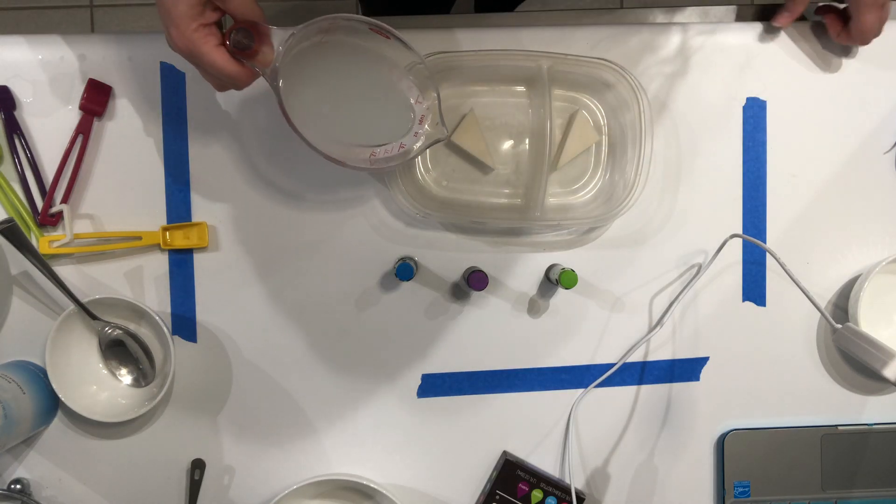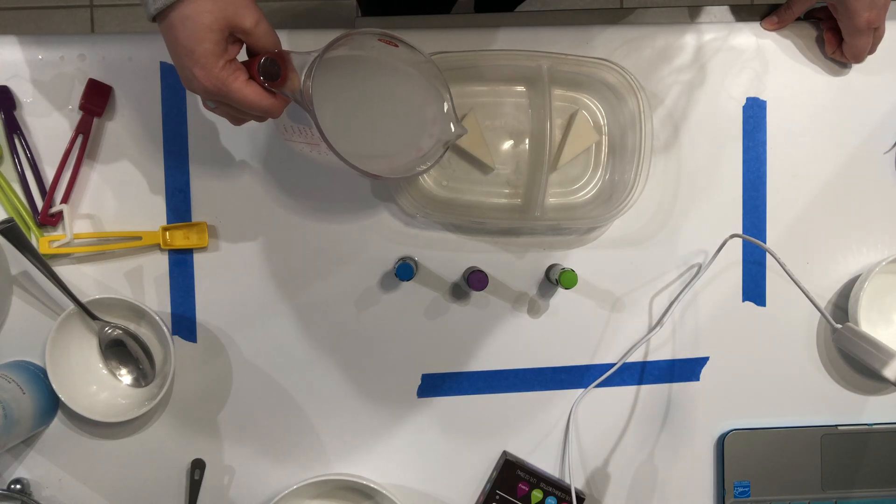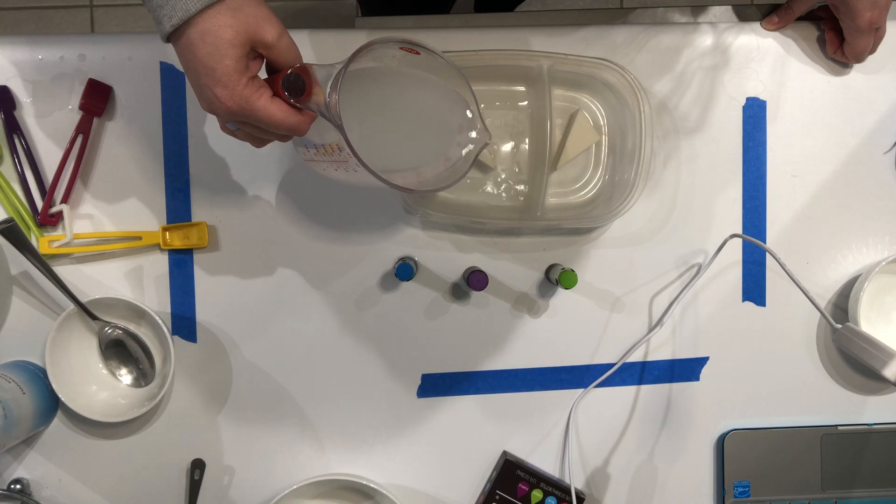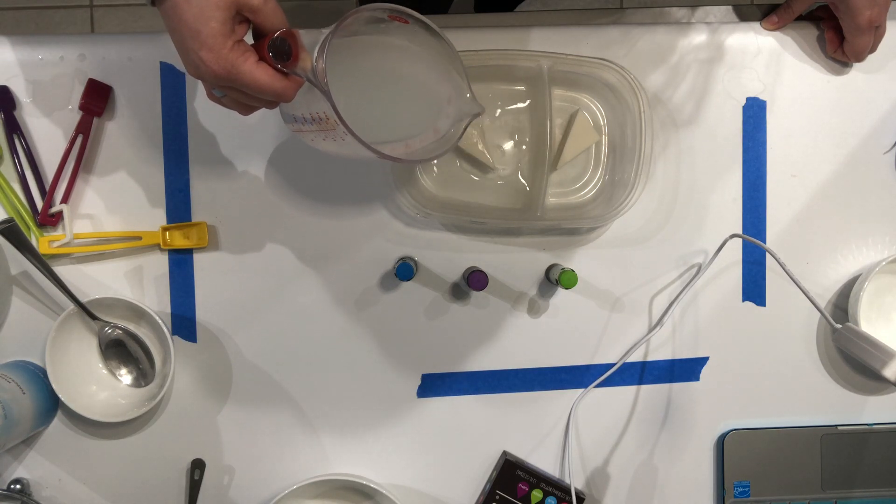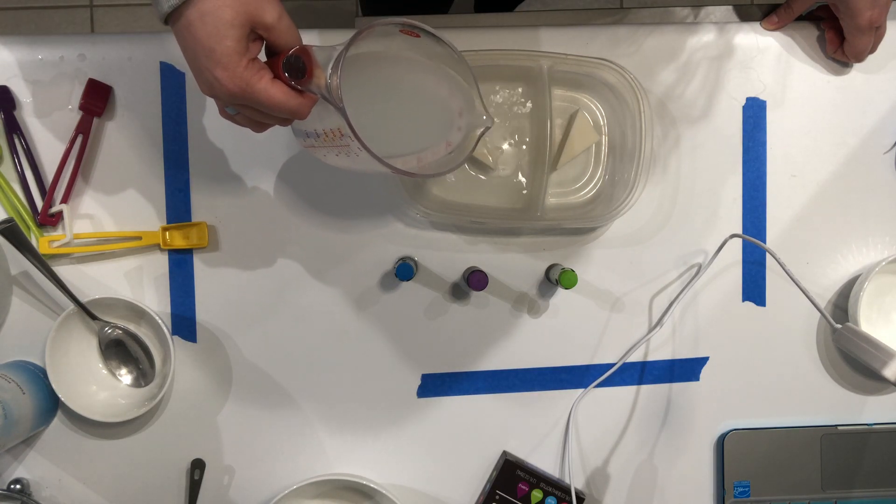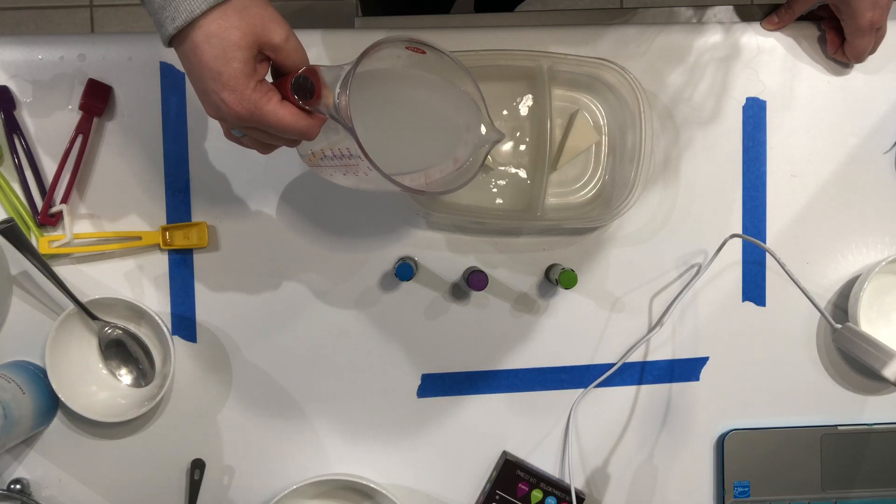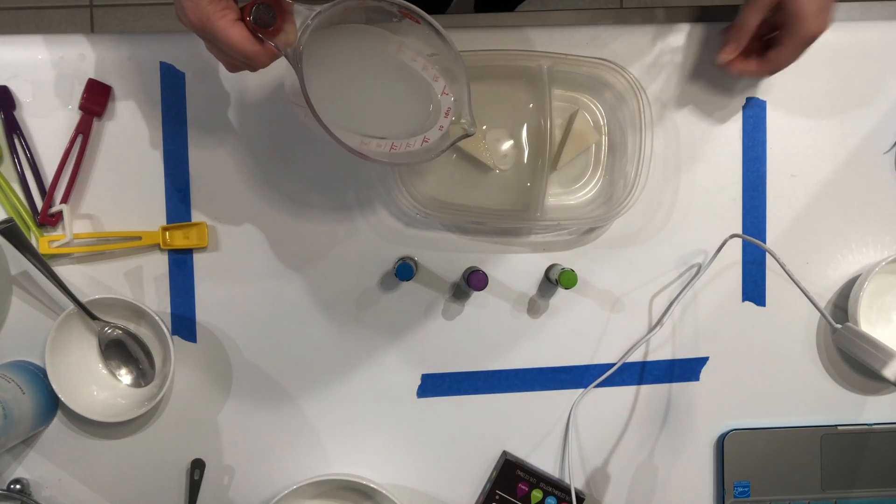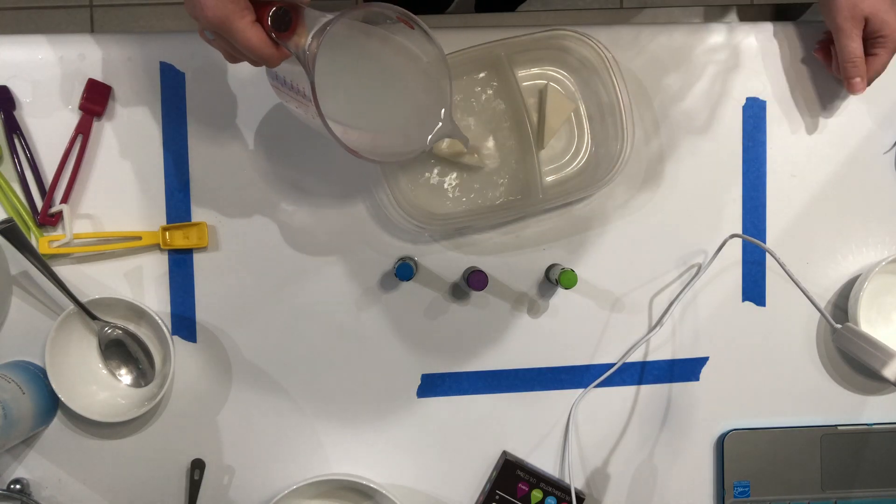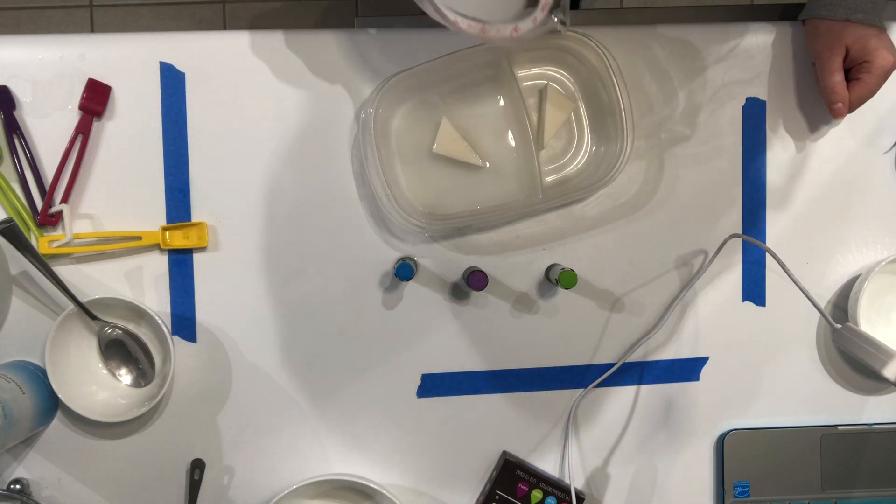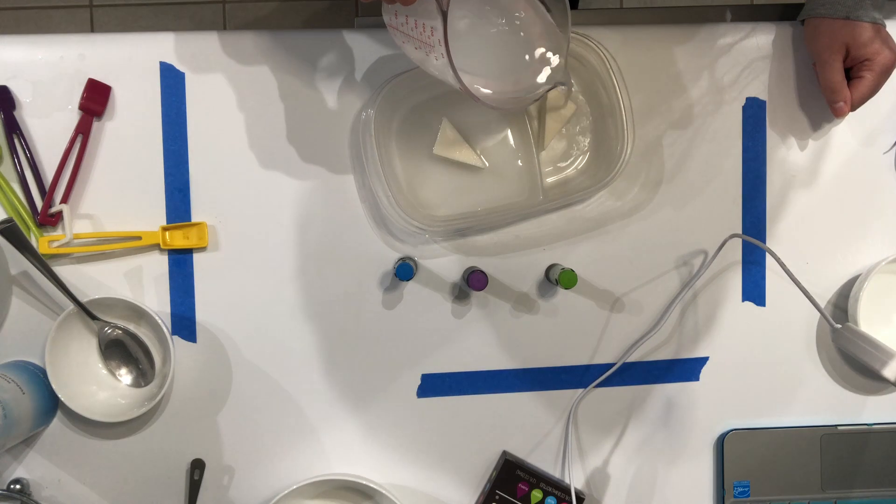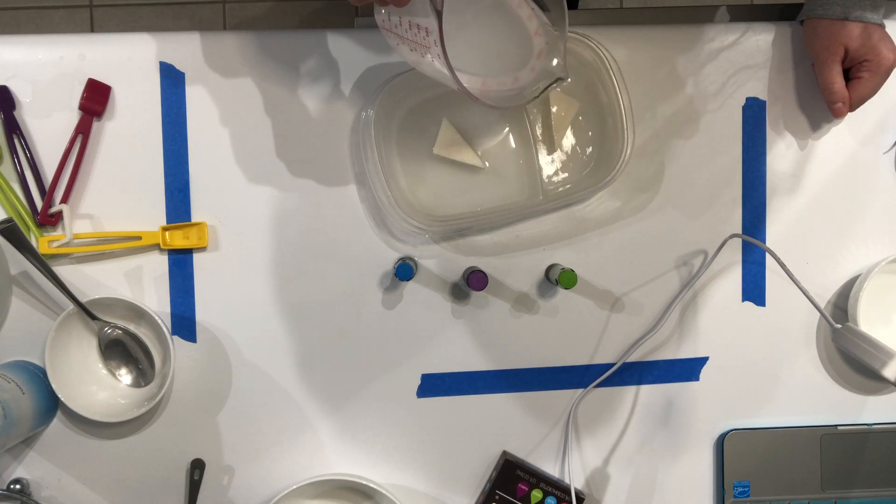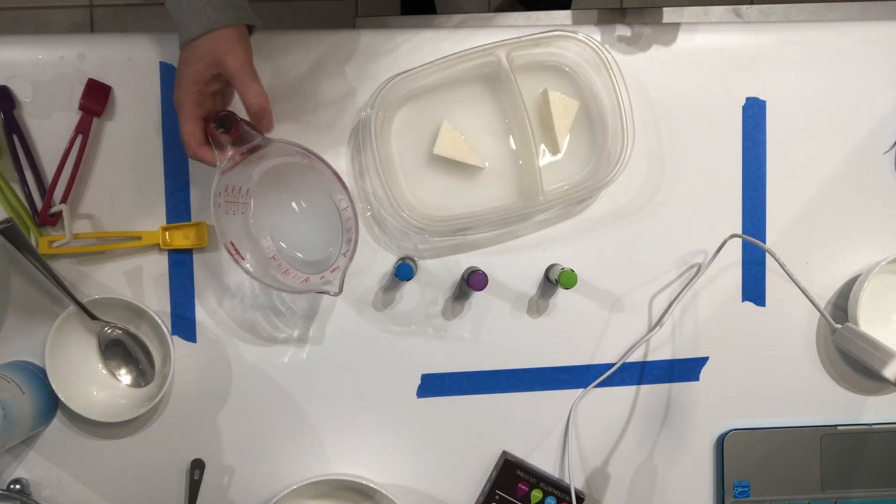So let's carefully pour this over our sponge and just about cover the bottom. That looks good. And then over here, same thing. That's plenty.